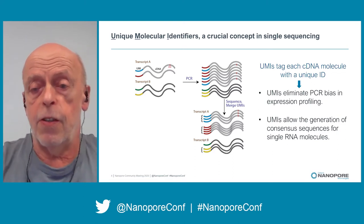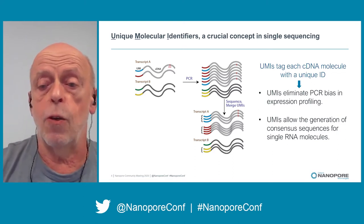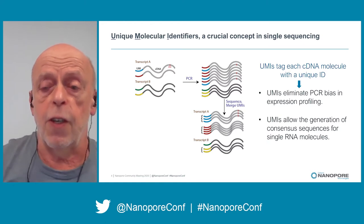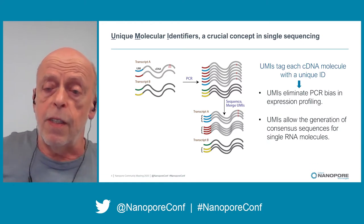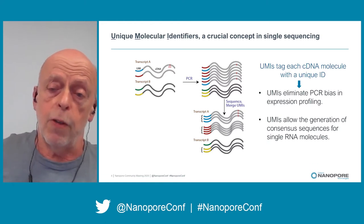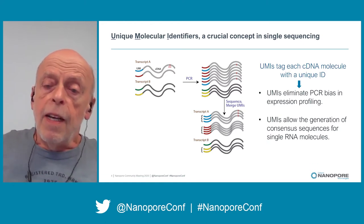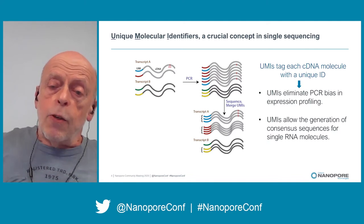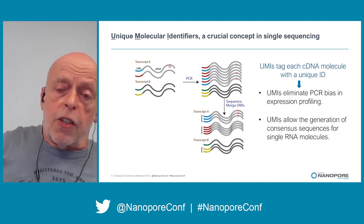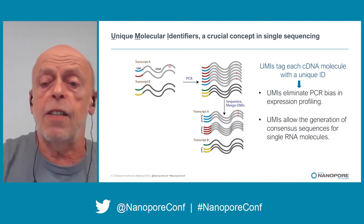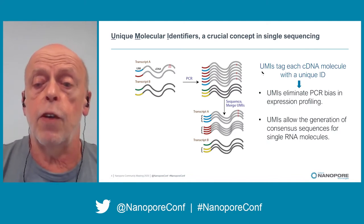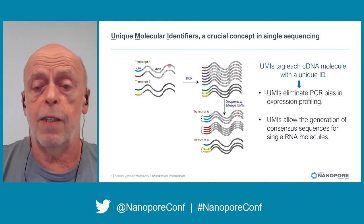On top of this, UMIs allow the generation of consensus sequences for RNA molecules. You can do error correction, and that's highly interesting for nanopore sequencing.